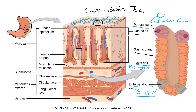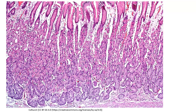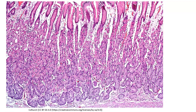Alright, we've seen it in a cartoon — now let's actually look at some real histological preparations. Here we can see a very low-magnification image of the stomach, but we can already make out some of those distinctive features. We can see the gastric pits right here, and you'll notice these surface epithelial cells have a very distinct appearance.